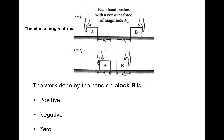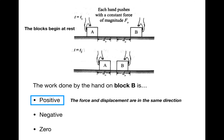The work done on block B is also positive because the hand pushes to the left and the block also moves to the left. Remember with work we should all agree on the sign — whether we took to the right to be positive or to the left to be positive, in either case we would get that the work done was positive on both of these blocks.